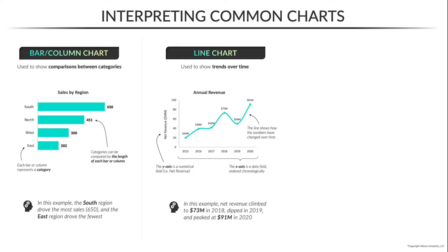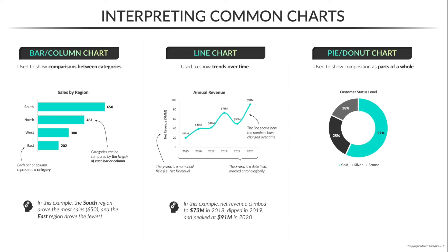Another visual you'll commonly see — and one that tends to be quite polarizing in the data community — is the pie or donut chart, which is used to show composition as parts of a whole. Here we see a donut chart, which is just a pie chart with a hole in the middle, showing the percent of customers in each status level: gold, silver, and bronze. Each segment of the donut represents a category, which can be compared by their size, and as a best practice those segments should be sorted largest to smallest. The reason some people are opposed to pie charts is that it can be difficult to compare angles or sizes of similar segments, especially compared to a simple bar chart.